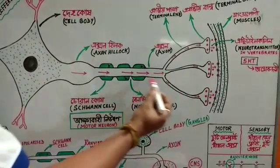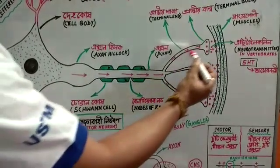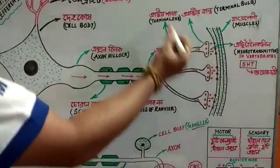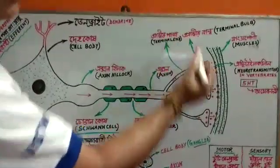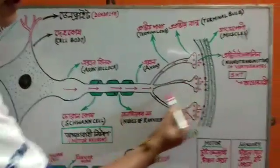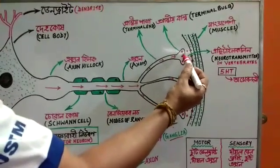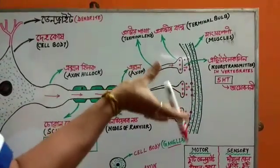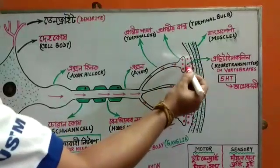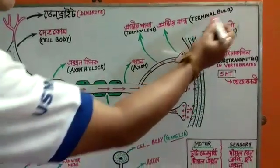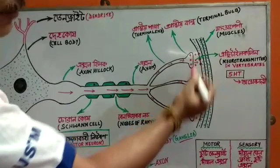The axon ends in a structure called the terminal end, also known as the terminal bulb. The terminal bulb is the end part of the axon where signals are transmitted onward.